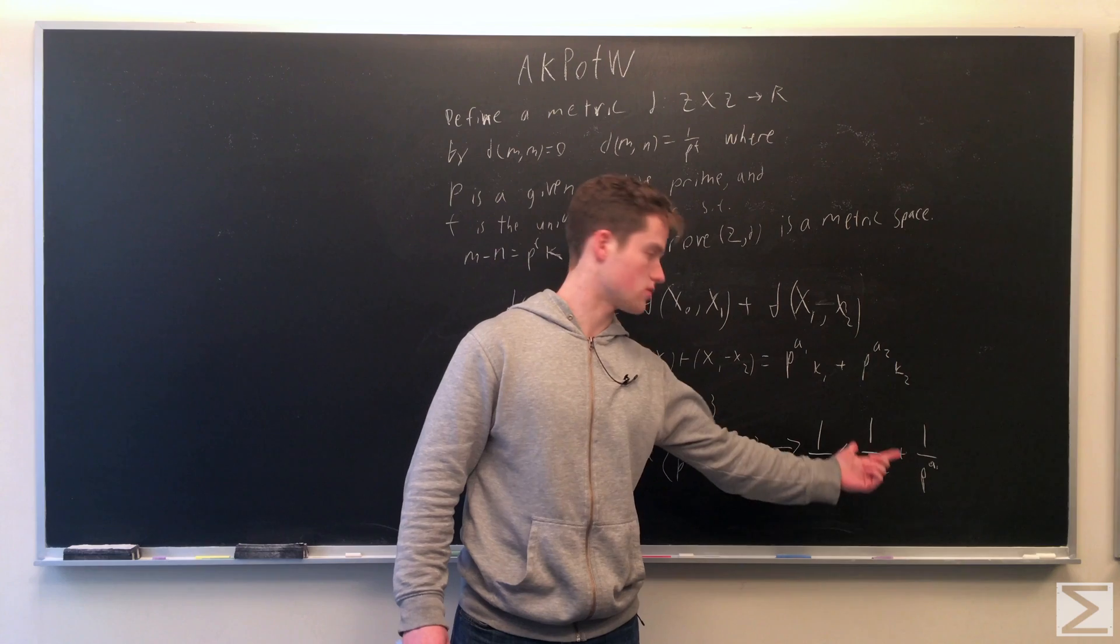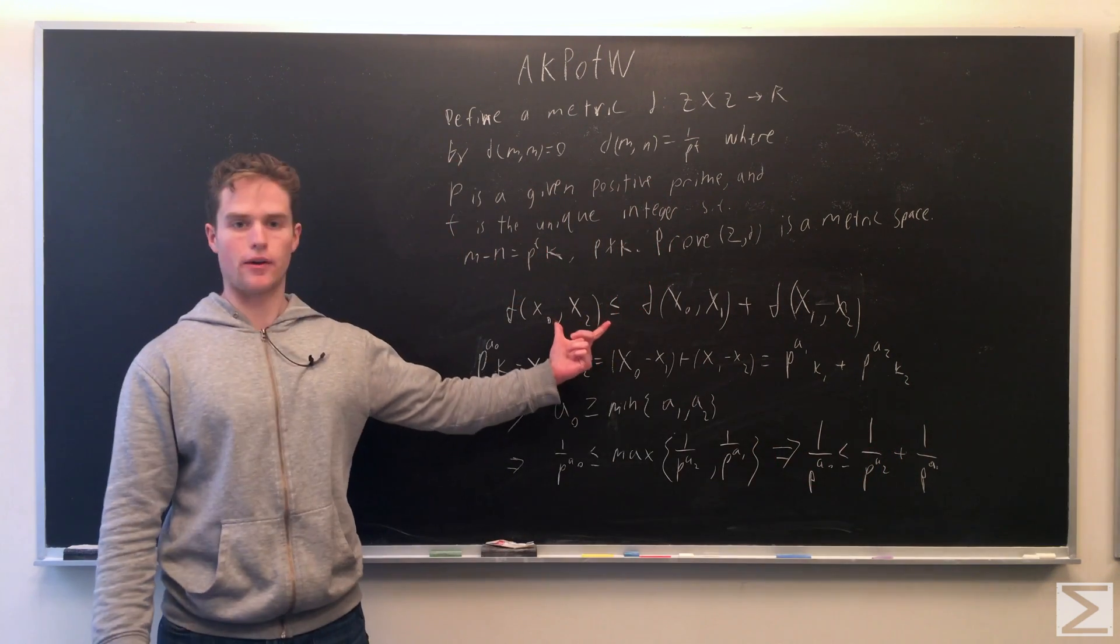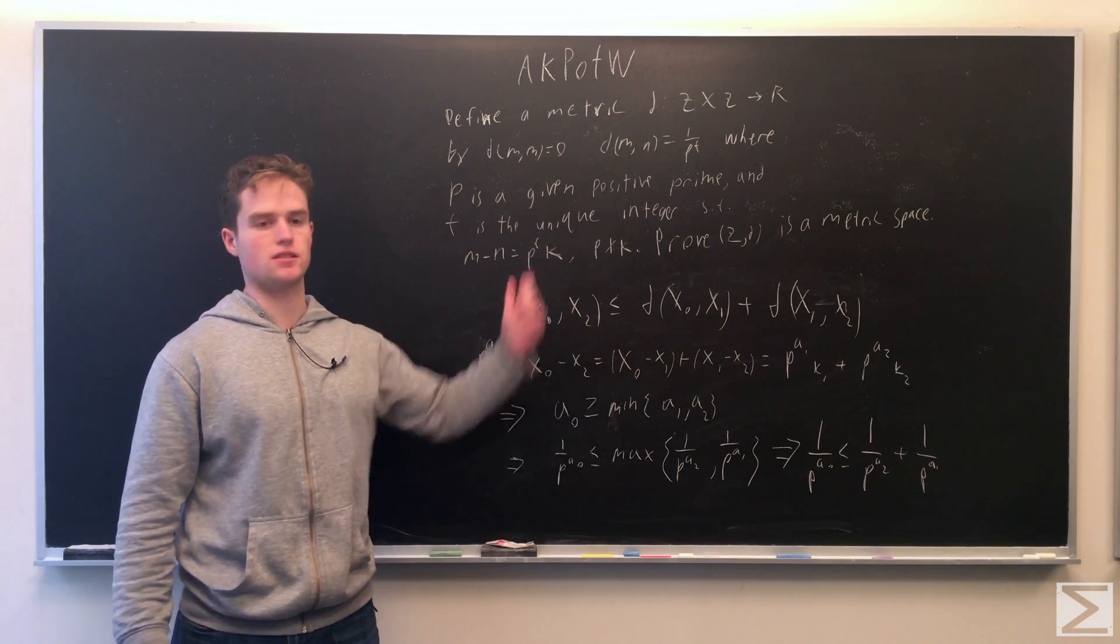Since 1 over p to the a0 is less than or equal to one of these, it's less than or equal to the addition of each, because they're both positive. And so our fourth axiom holds true, and this is a metric space.